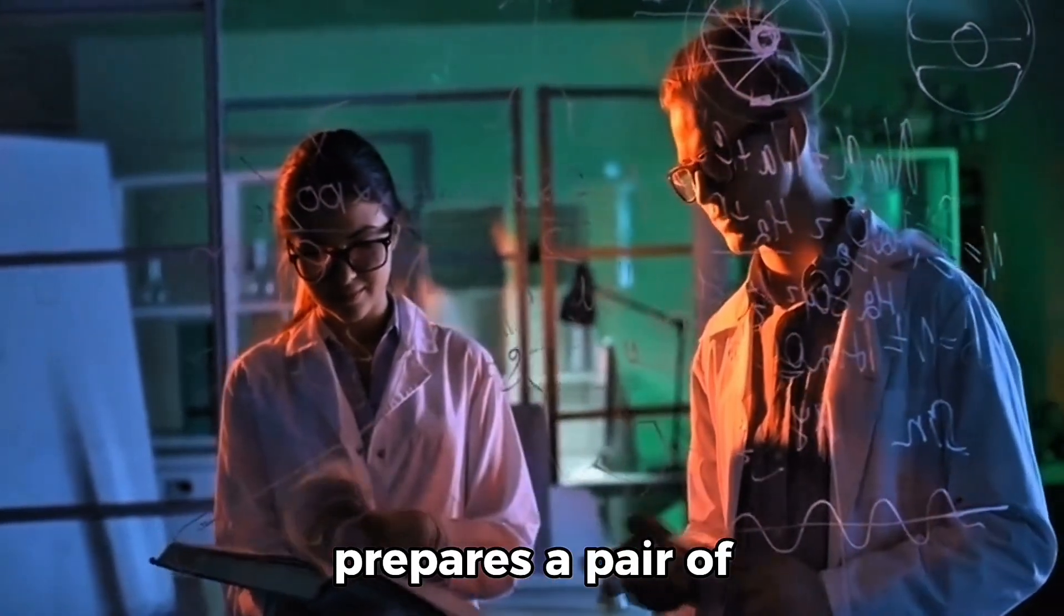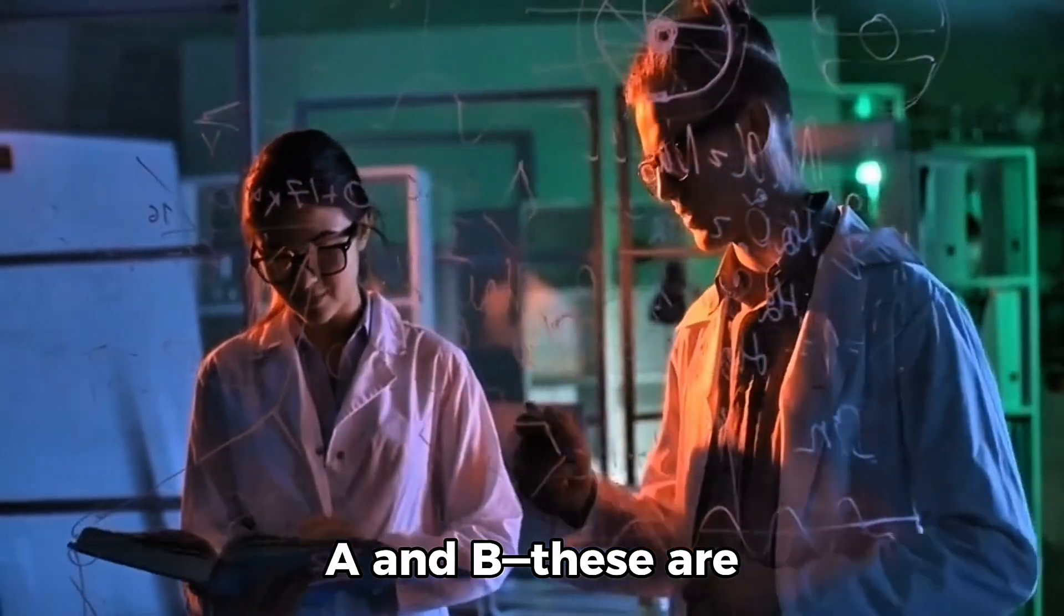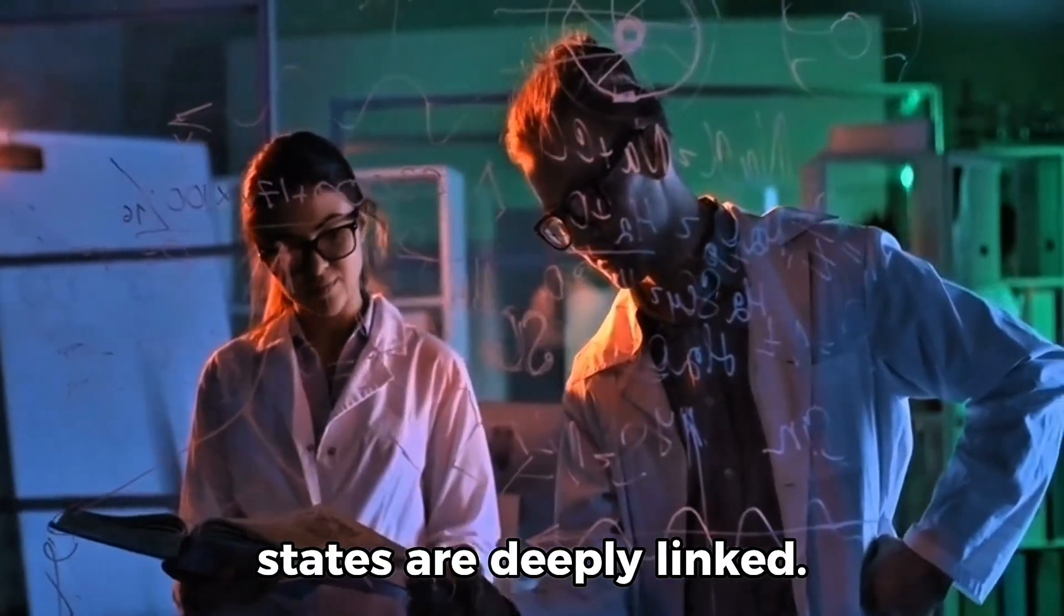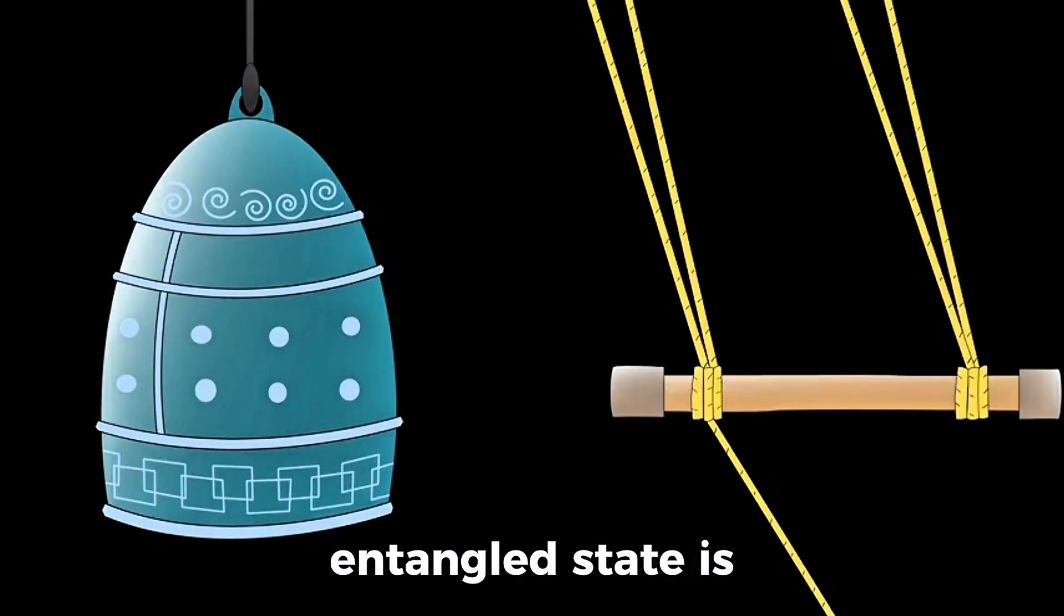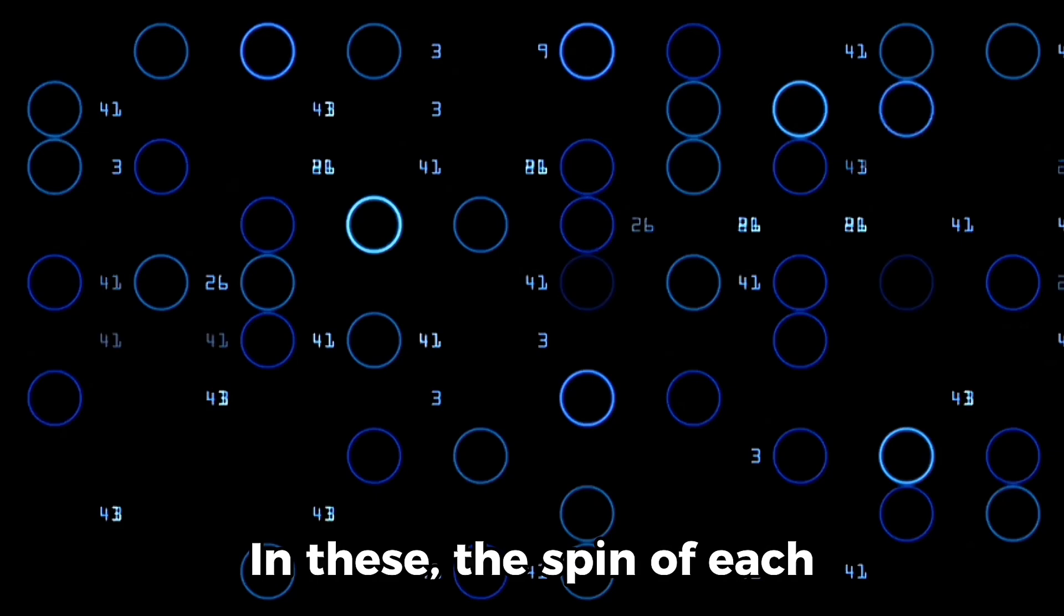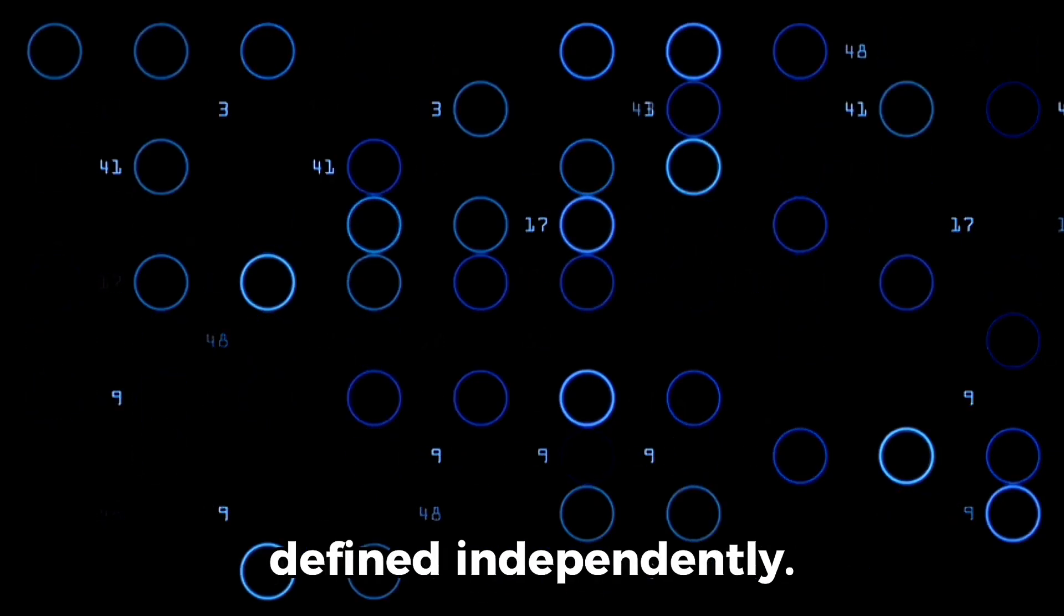In Bob's lab, he prepares a pair of entangled qubits labeled A and B. These are particles whose quantum states are deeply linked. This specific kind of entangled state is known as a bell pair. In these, the spin of each qubit, up or down, is not defined independently.